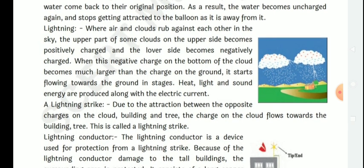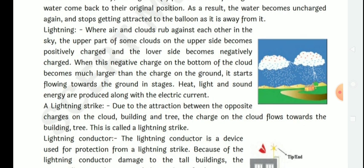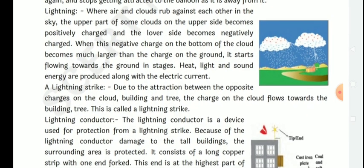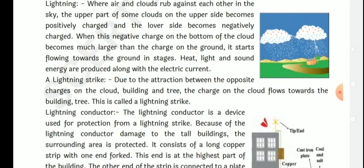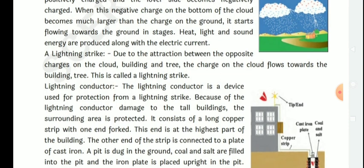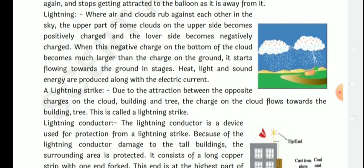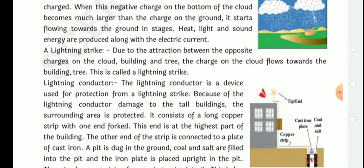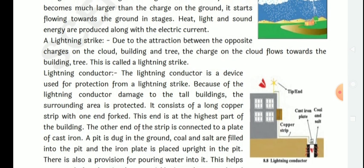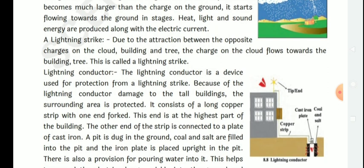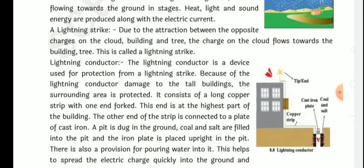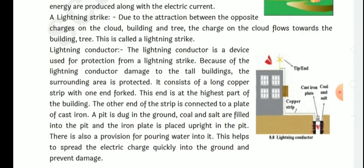In the sky, the upper part of some clouds becomes positively charged and the lower side becomes negatively charged. When this negative charge on the bottom of the cloud becomes much larger than the charge on the ground, it starts flowing toward the ground in stages. Heat, light and sound energy are produced along with the electric current. Lightning strike occurs due to the attraction between opposite charges on the cloud and the building or tree. This is called a lightning strike.